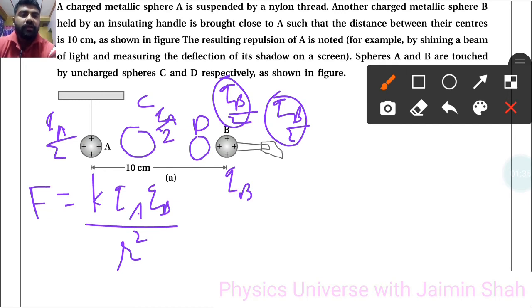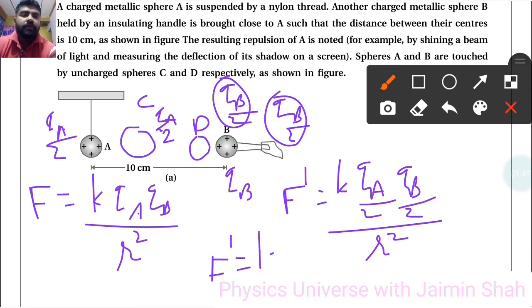Both have same charges. So now my new force F dash is equal to K QA by 2 QB by 2 upon R square. So F dash is equal to QA QB upon 4 R square. That means F dash is equal to F upon 4.